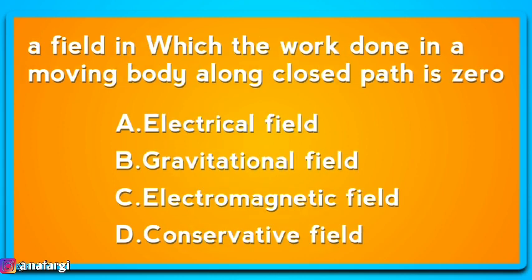A field in which the work done in moving a body along a closed path is zero is: A, electric field; B, gravitational field; C, electromagnetic field; D, conservative field.